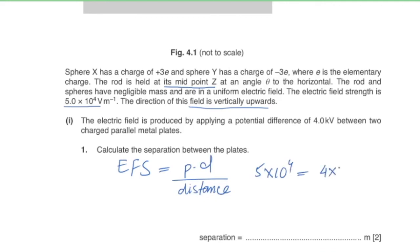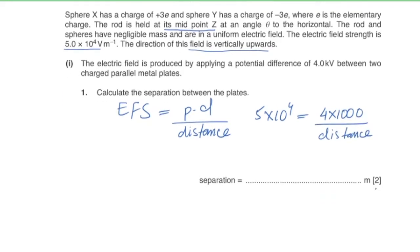When the electric field is produced by a potential difference of 4 kV between two metal plates, calculate the plate separation. Using E = V/d: 5 × 10⁴ = 4000 / d, giving a separation of 8 × 10⁻² meters.